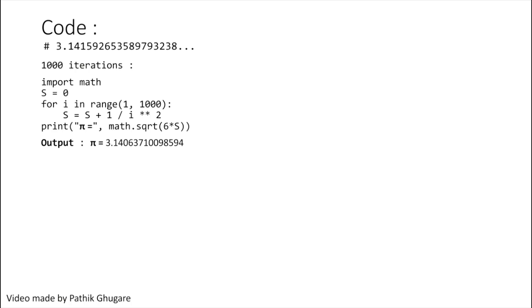Now let's see what we get for 10,000 iterations. Code part will be the same, only difference will be there in the for loop is the number of iterations. So we get pi equals to 3.1414 and so on.